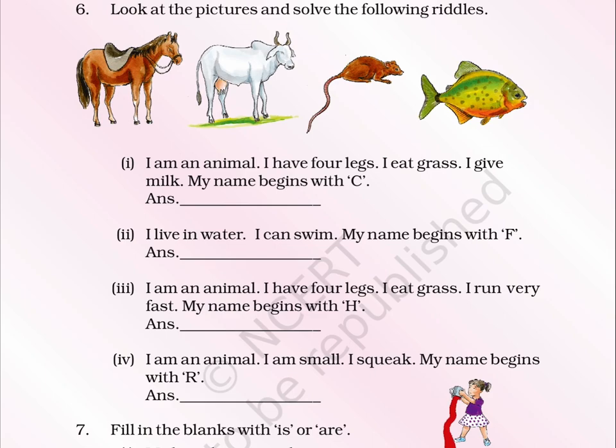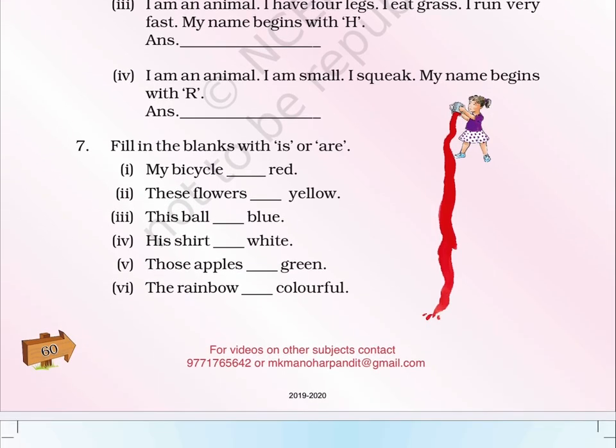Riddle 3: I am an animal. I have four legs. I eat grass. I run very fast. My name begins with H. Answer: ___. Riddle 4: I am an animal. I am small. I squeak. My name begins with R. Answer: ___.